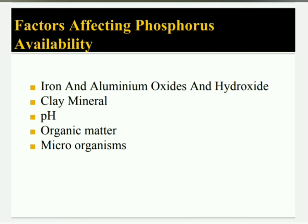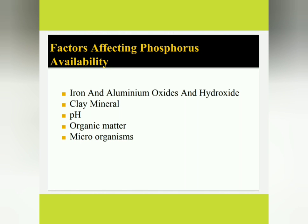Factors affecting phosphorus availability include: iron and aluminum oxides and hydroxides, clay minerals, pH, organic matter, and microorganisms. Iron and aluminum oxides present in acid soils have the capacity to absorb large amounts of solution phosphorus, rendering it unavailable to plants.